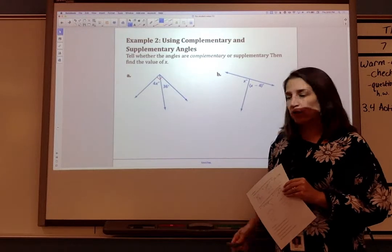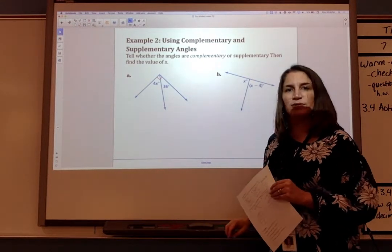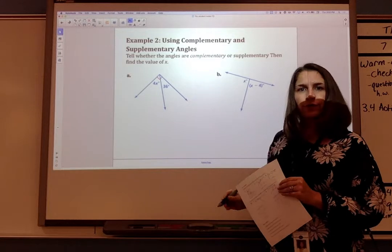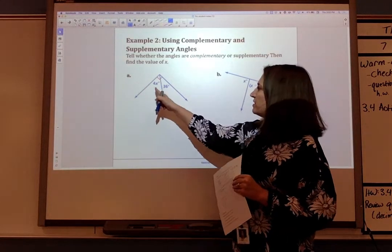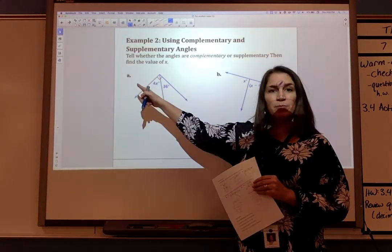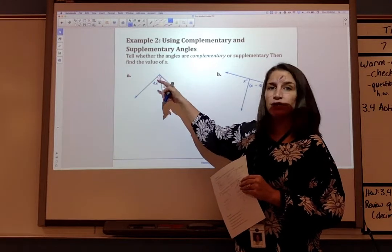Let's take a look at what we know about complementary and supplementary angles and see if we can solve for X. So this set of angles I can tell is complementary because they add to 90 degrees.